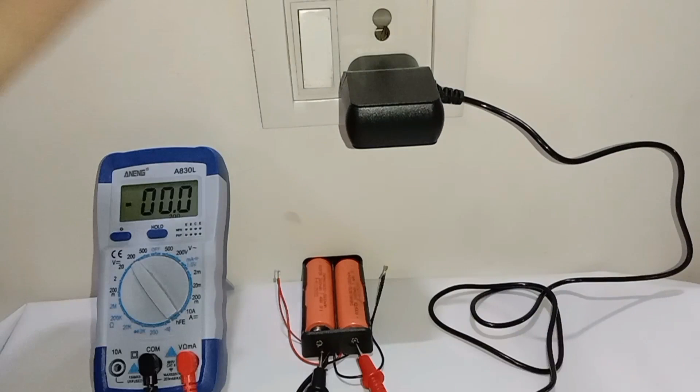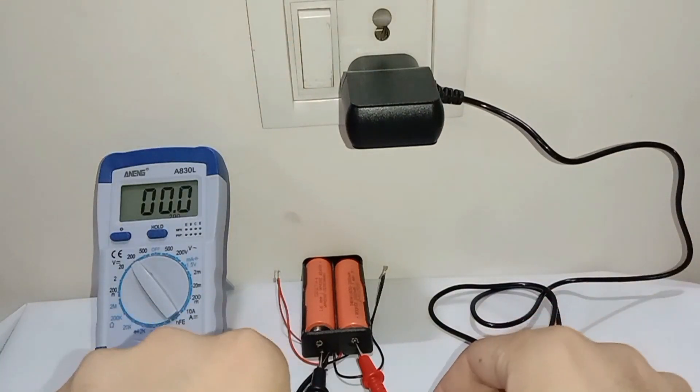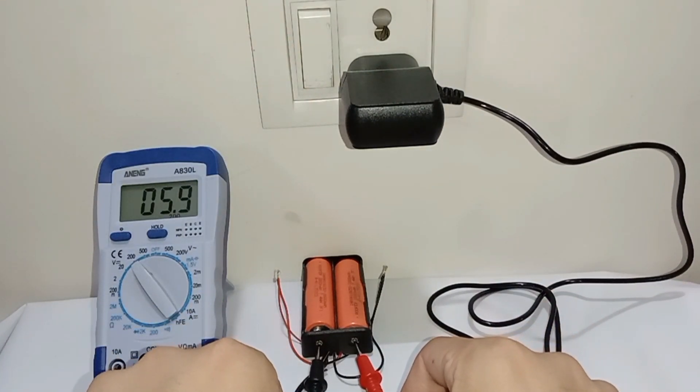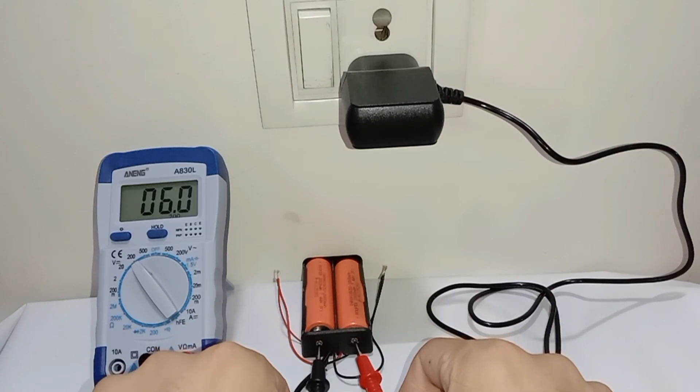And finally, the circuit is complete and switch on your charger. Then it will start charging. We will check the battery voltage with our multimeter.